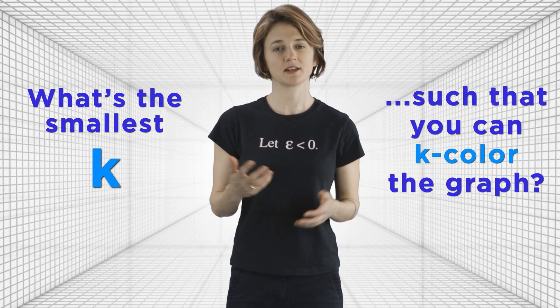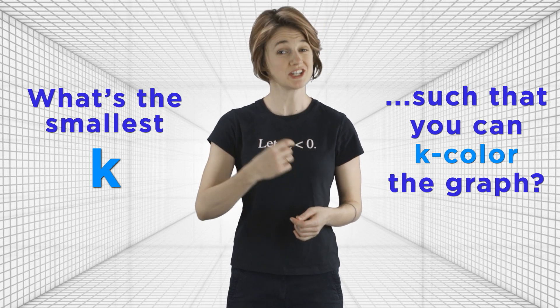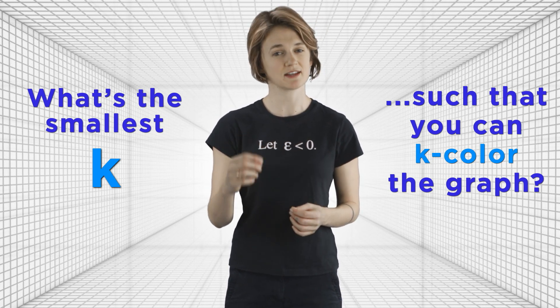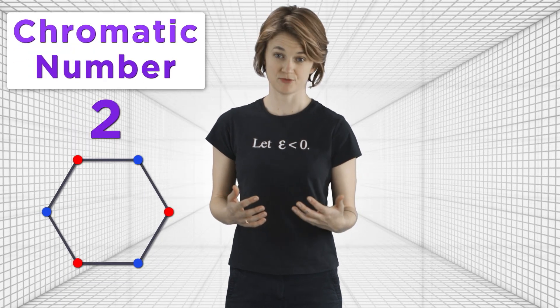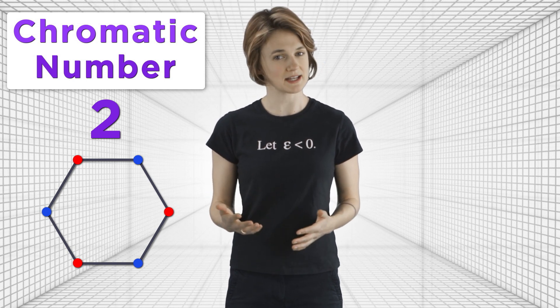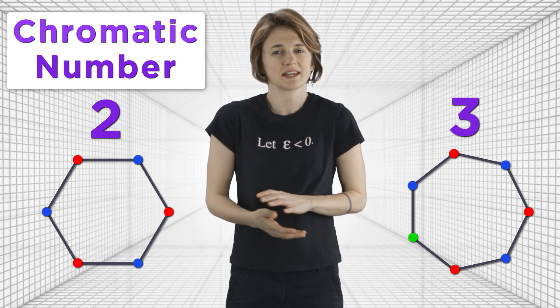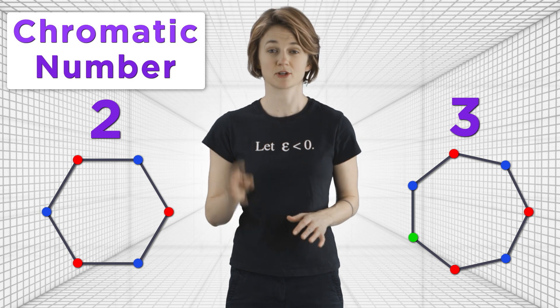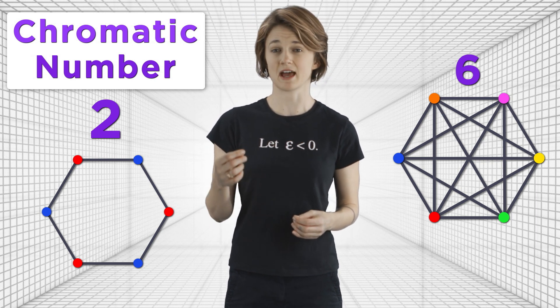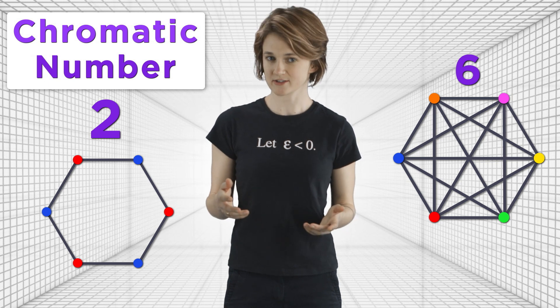Let's ask the analogous question for any graph. Given a graph, what's the smallest k such that you can k-color the graph? In other words, what's the smallest number of colors you need to color each vertex so that no two vertices connected by an edge are the same color? The number that answers this question is called the chromatic number of the graph. For example, the chromatic number of this graph is two. Any cycle of even length can be colored by two colors, but a cycle of odd length requires three colors — it simply can't be colored with only two, so it has chromatic number three. This graph has chromatic number six: there are six vertices and every vertex is connected to every other one, so they all need to be different colors.